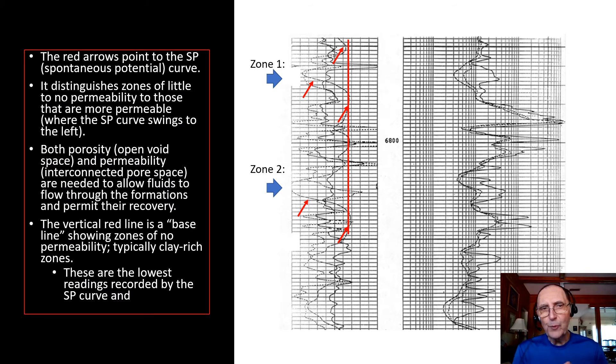The red arrows point to the spontaneous potential, or the SP curve. The SP curve distinguishes between zones of little to no permeability to those that are more permeable, where the SP curve actually swings to the left. Both porosity and permeability are needed to allow fluids to flow through the rock formations and to allow the recovery of these fluids.